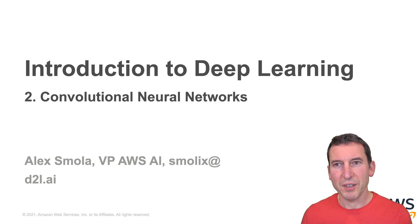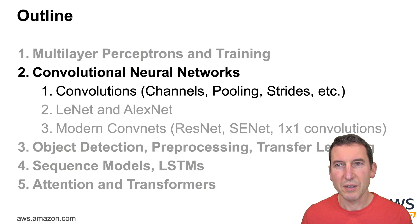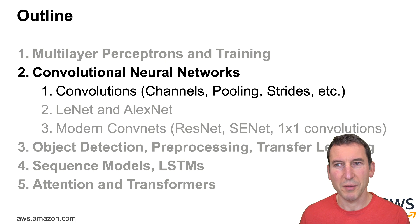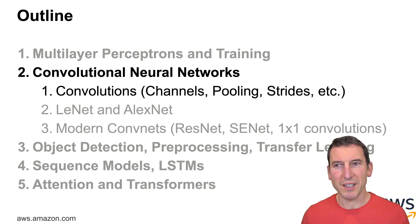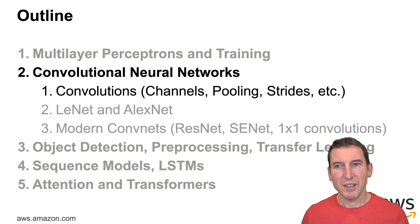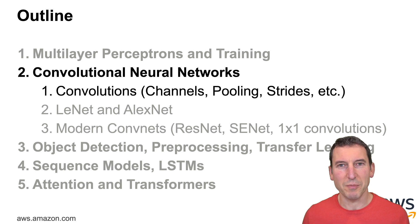Welcome to this crash course on deep learning, part two: convolutional neural networks. We're going to first look at convolutions proper — namely channels, pooling, strides, and so on. Then we'll advance to convolutional networks per se, such as LeNet and AlexNet, which are very similar even though they are separated by over a decade. Then we'll discuss all the innovations that went into modern convolutional neural networks in order to classify images properly.